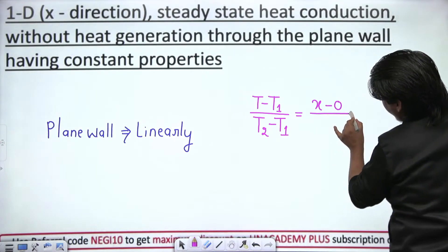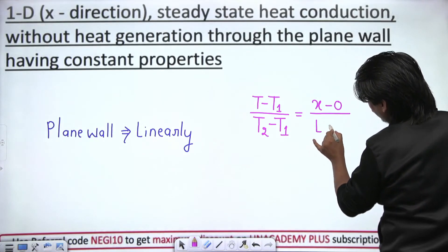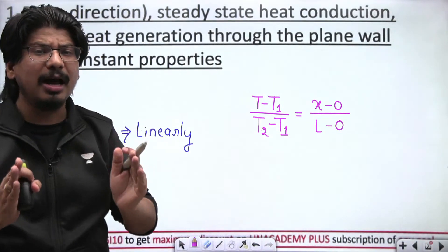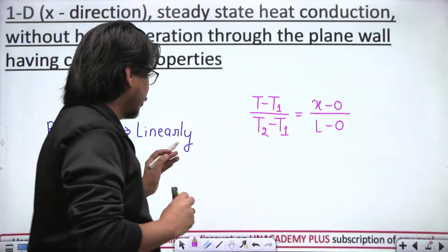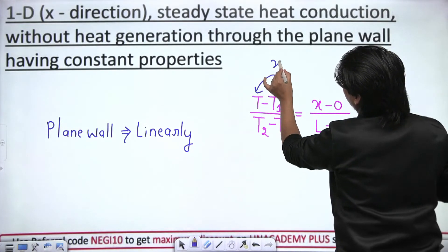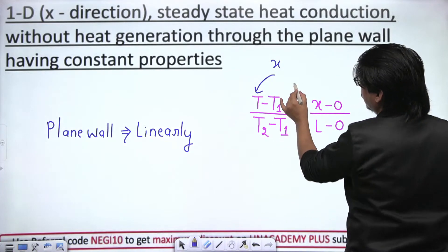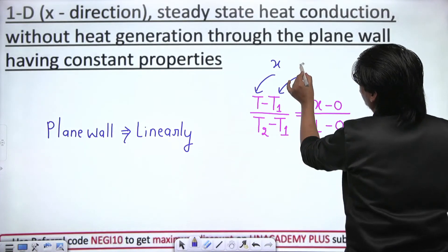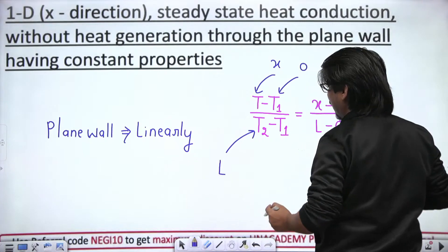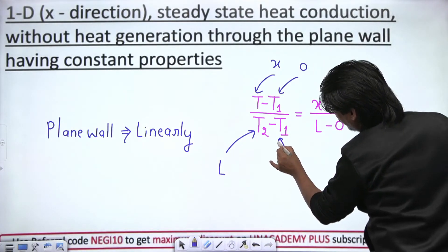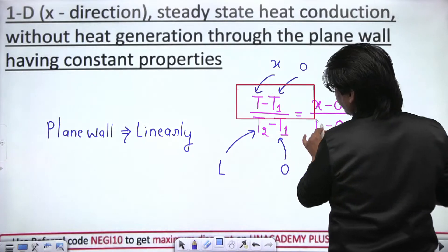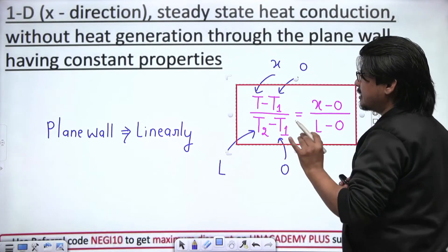...equals (x − x1) / (x2 − x1), where x2 is capital L. I am assuming the thickness of the plane wall is capital L. Here, T is the temperature at distance x from the left face (x = 0), T1 is the temperature on the left face (x = 0), and T2 is the temperature on the right face (x = L). That is the plane wall formula.